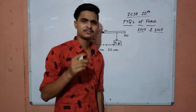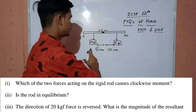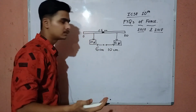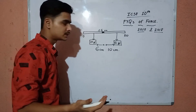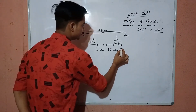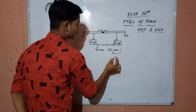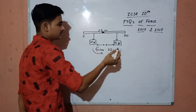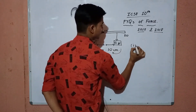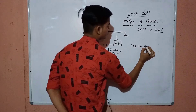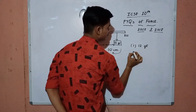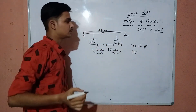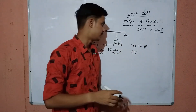The first question is very easy: which of the two forces produces a clockwise moment? The 12 gram force is trying to produce a clockwise moment, while the 20 gram force is trying to produce an anticlockwise moment. So the answer to the first question is: the 12 gram force produces the clockwise moment.